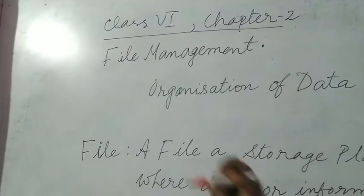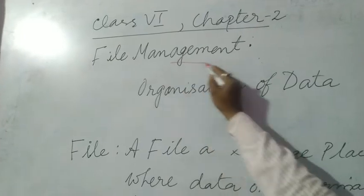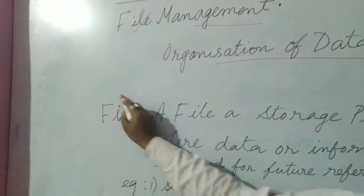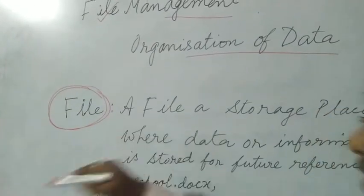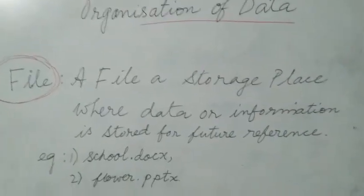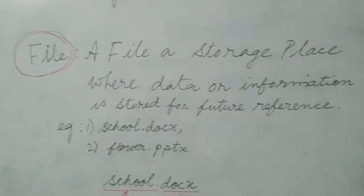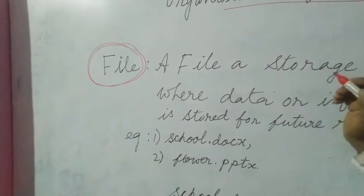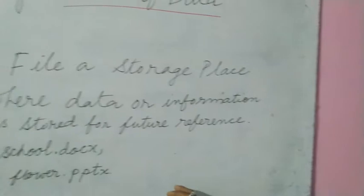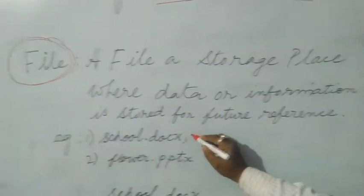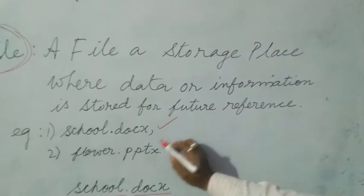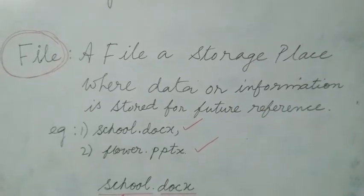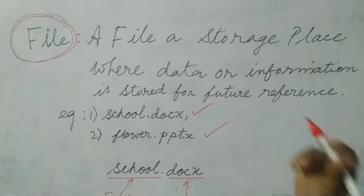Class 6 chapter 2, the name is file management organization of data. First we should define the meaning of the term 'file'. A file is a storage place where data or information is stored for future reference. For example, school.docx is a word file, flower.pptx is a PowerPoint file. In order to create a file, I should take the help of any application software.